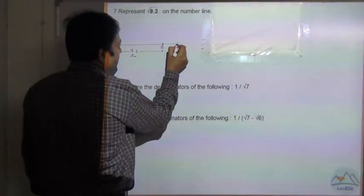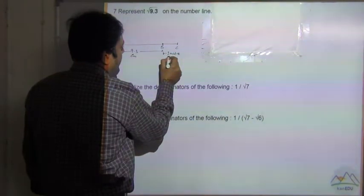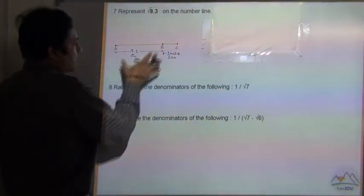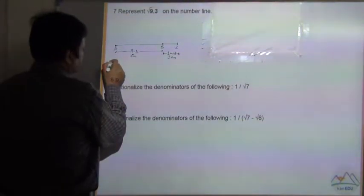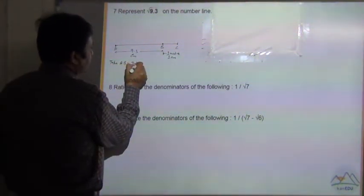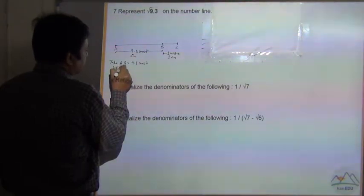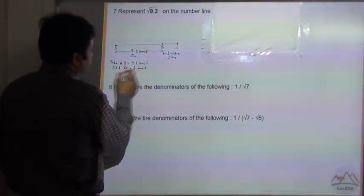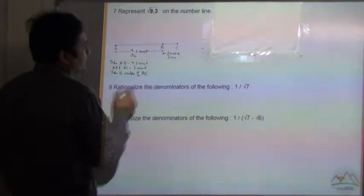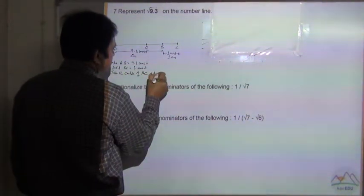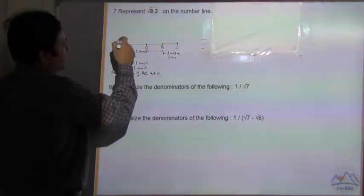Now add 1 unit in this, so 1 unit means 1 centimeter. Now take the center of this line AC. So take AB equal to 9.3 units and add BC equal to 1 unit. Now take the center of AC — the center of AC will be at point O.